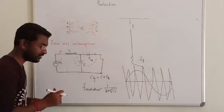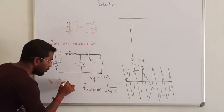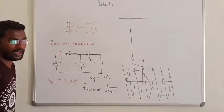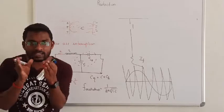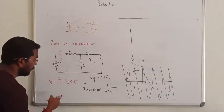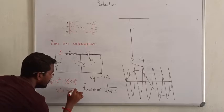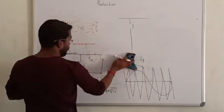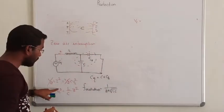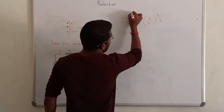Under resonance, the energy stored in the inductor is ½LI². The energy stored in the capacitor is ½CV². Setting these equal gives L by C times I squared, so the voltage drop across the capacitor Vc equals the square root of L over C, multiplied by I.